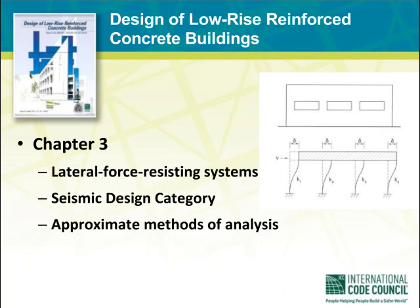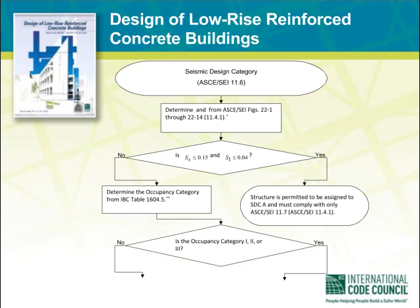Lateral force resisting systems typically used in low-rise reinforced concrete buildings are summarized in Chapter 3. Also included is a procedure on how to determine seismic design category and the limitations imposed on the various lateral systems. Approximate methods to determine stiffness of lateral force resisting system elements and distribution of lateral forces to the vertical resisting elements are also provided. Shown here is a portion of a flowchart in Chapter 3 on how to determine seismic design category. In general, the flowcharts provide a roadmap that guides the reader through the intricate requirements in the code.